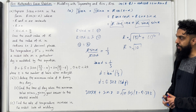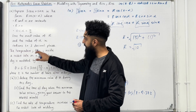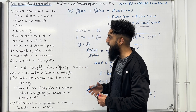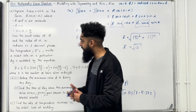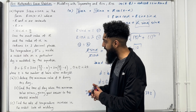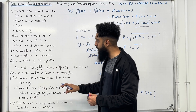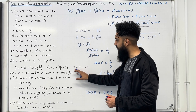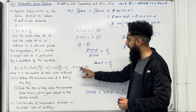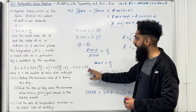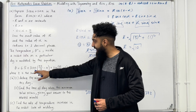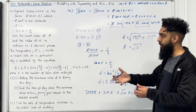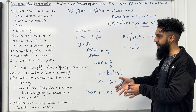Moving on to Part B. The temperature theta degrees Celsius inside a rabbit hole on a particular day is modelled by the equation theta equals 6.5 plus 3 cos(pi t over 13 minus 4) plus sin(pi t over 13 minus 4), where t is between 0 and 24, including 0 but excluding 24, and t is the number of hours after midnight. So the model begins at midnight, which is 12am.